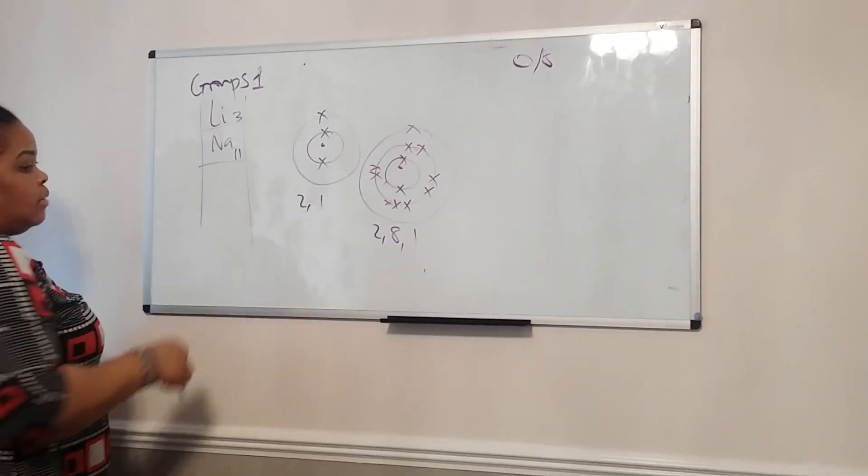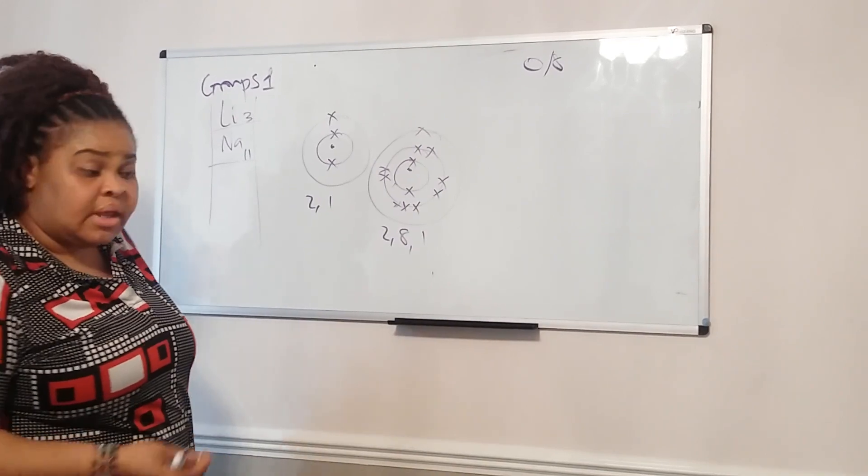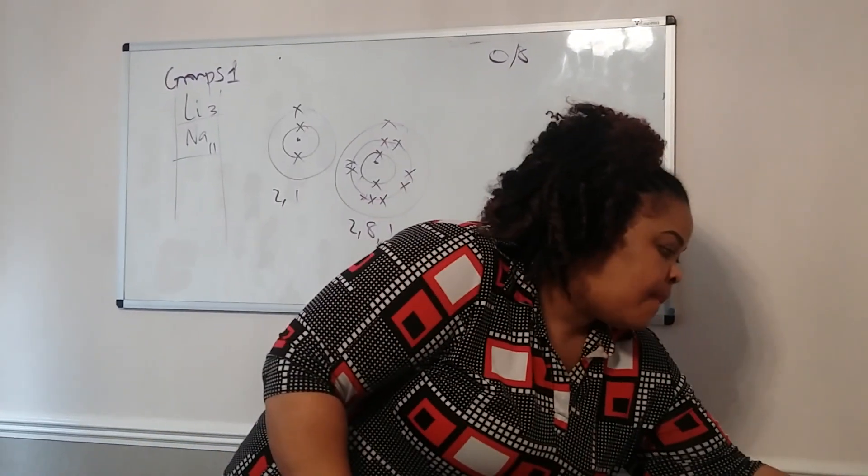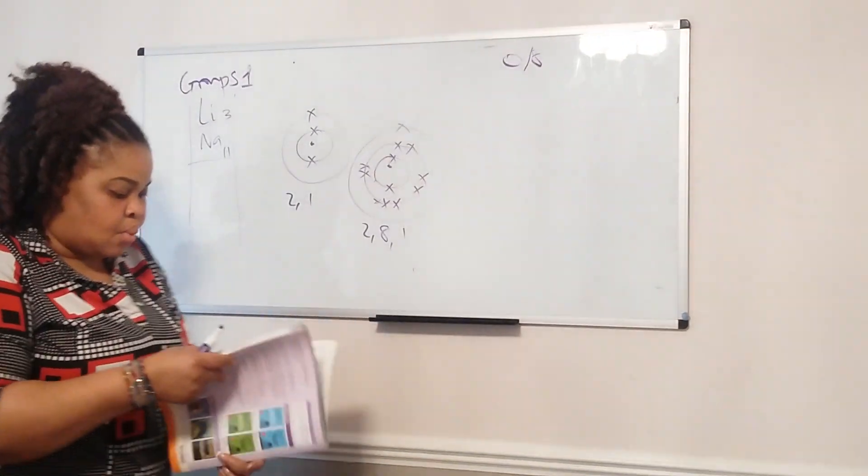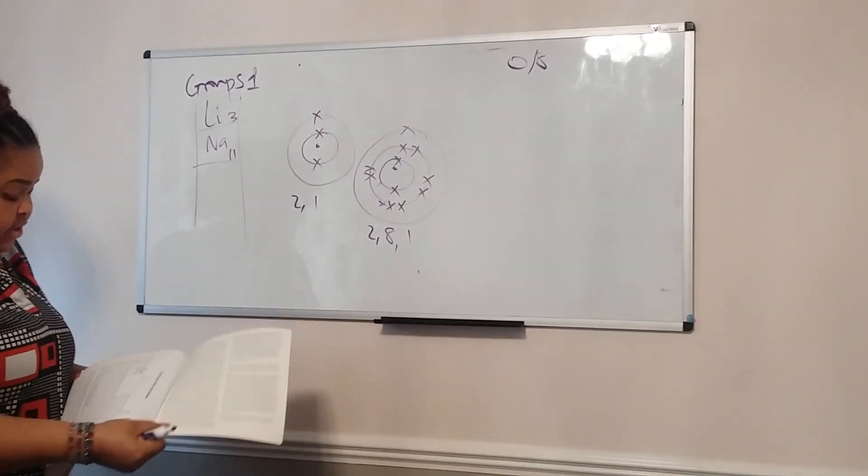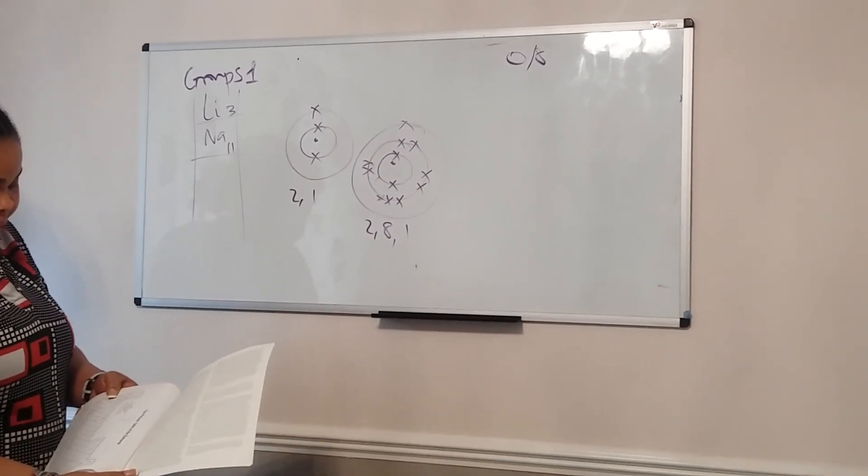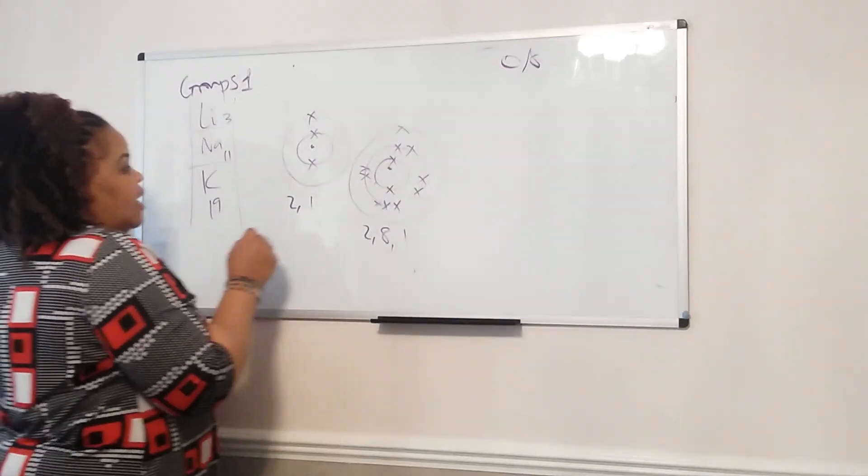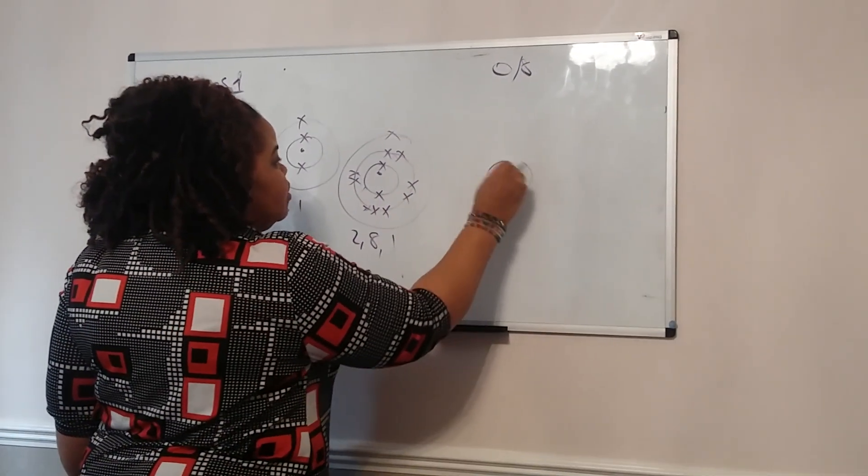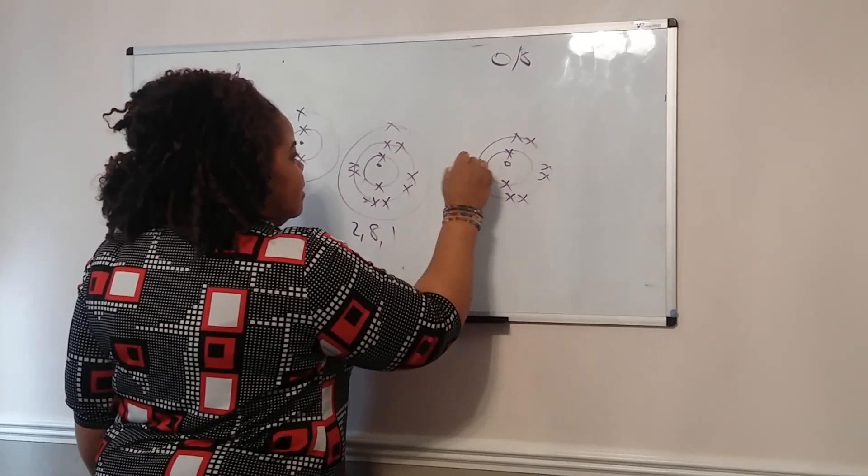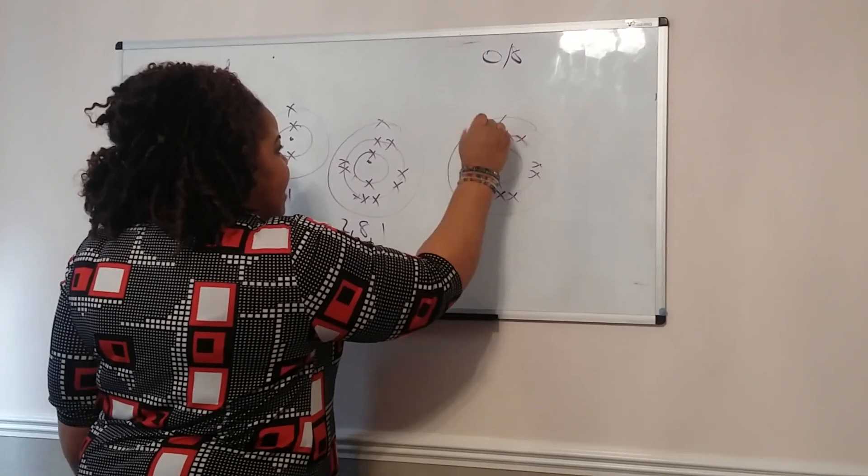So you go down the periodic table. Like I said, you'll be given a periodic table that you can refer to. If I just quickly pull it up, I could give you the next one down on the periodic table. So I have lithium, which is 3, sodium 11, and potassium is the next one. Potassium is 19. If I was to draw potassium, it would be 2-8-8...